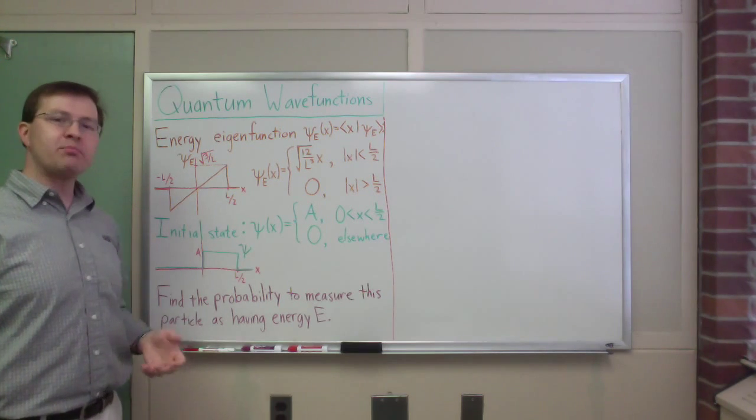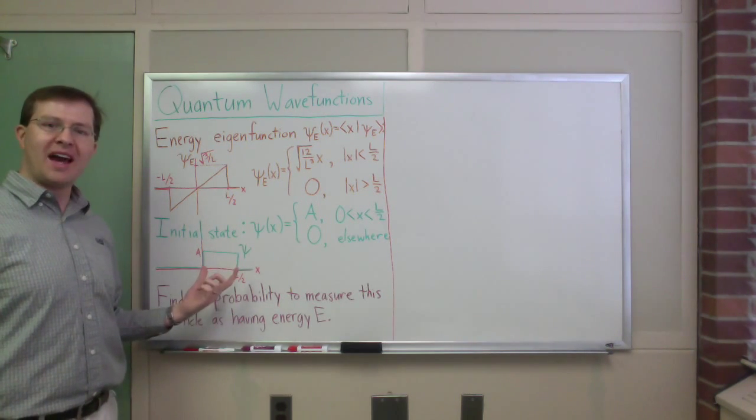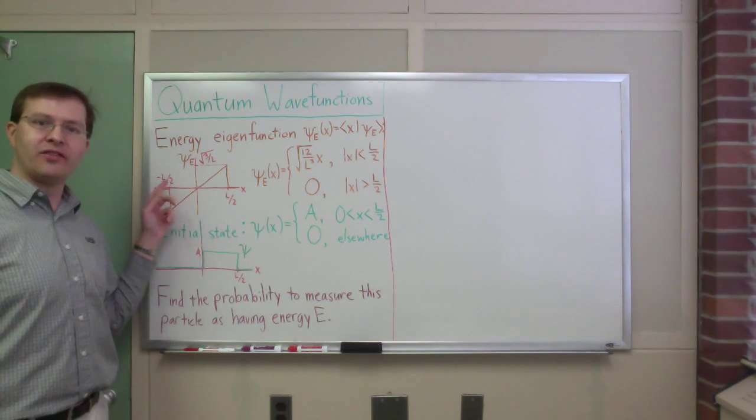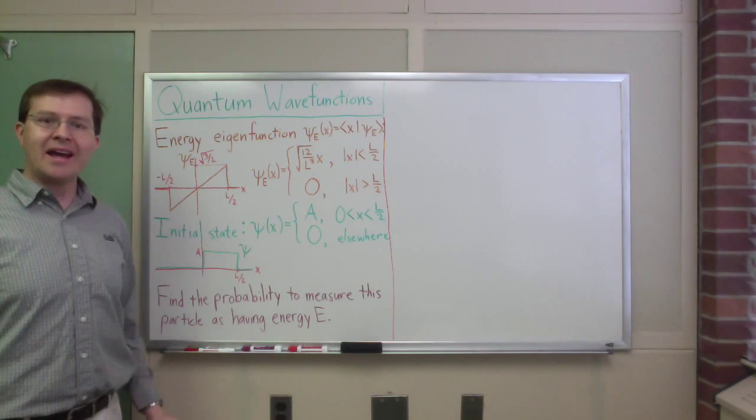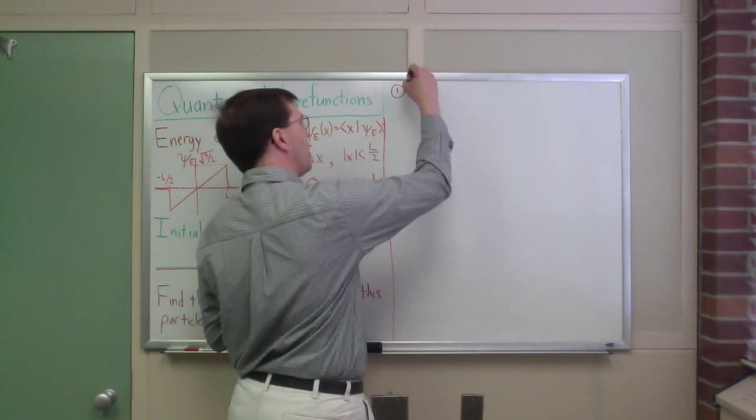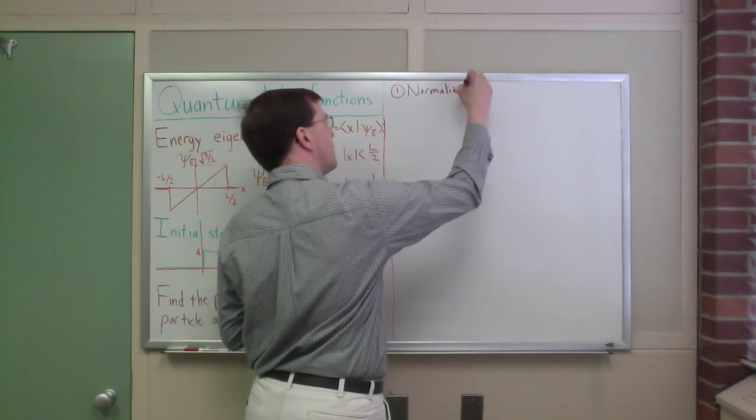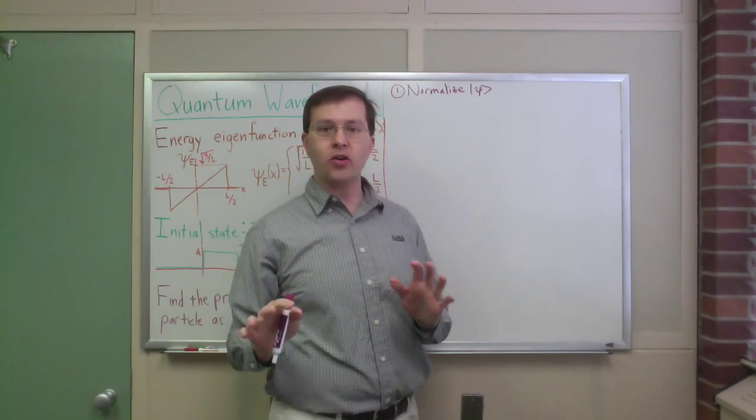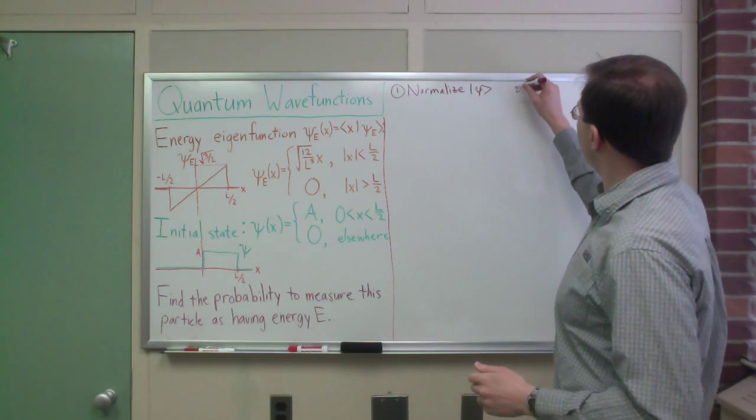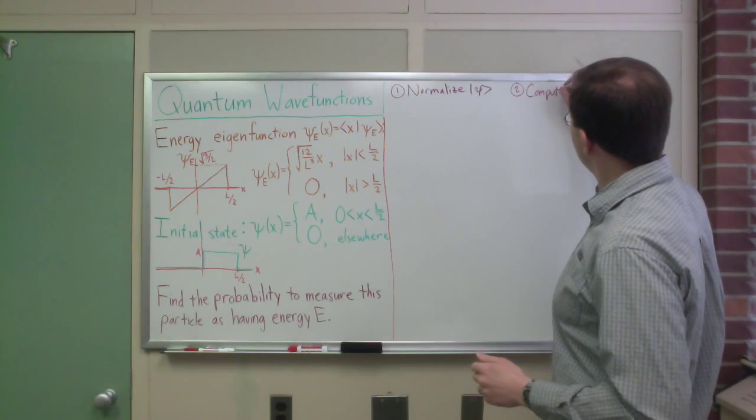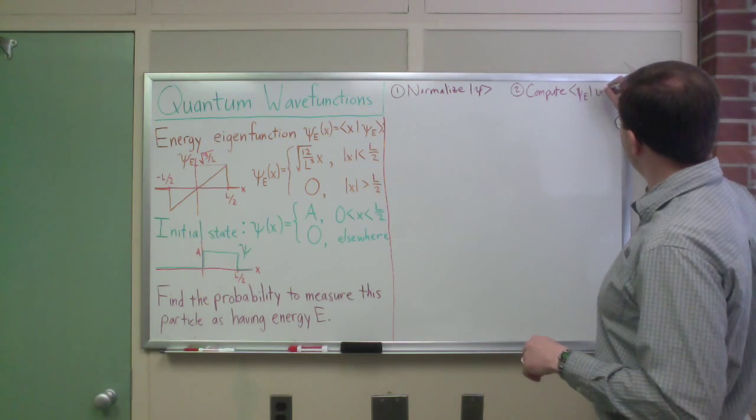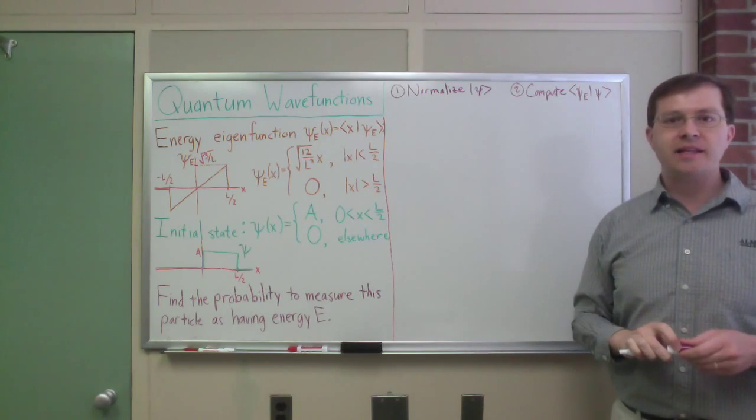And what I want to ask is, what is the probability that if this is the initial state of my particle, and I measure its energy, what is the probability that this will give me a value of E, corresponding to that eigenfunction, that energy eigenfunction, that energy state? That's my question. To answer that question, I've got to do two things. Step one is going to be that I need to normalize my state psi, because what I've given right now is not a normalized state. Step two is going to be to compute, any time we do probabilities, we're going to compute a probability amplitude. I want to compute the amplitude to measure state psi E if I start in state psi. Those are the two steps I need to do.